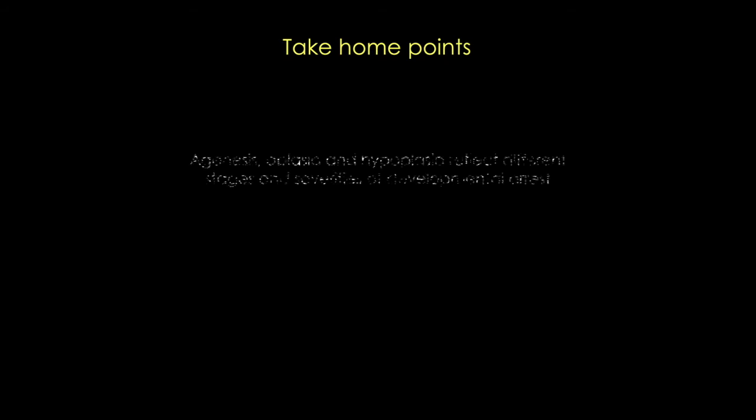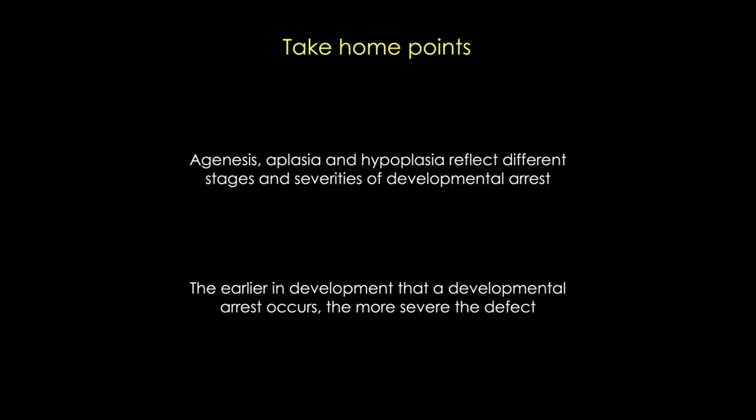There are two key points to remember today. First, the terms agenesis, aplasia, and hypoplasia reflect varying severities of developmental arrest of an organ or structure. And second, the earlier in development that an arrest occurs, the more severe the defect and the less functional the organ is. You can think of these terms on a spectrum, with agenesis having the worst and most severe defects and hypoplasia the least.